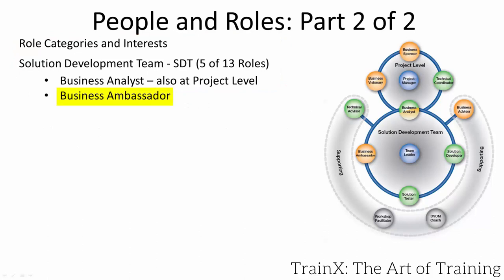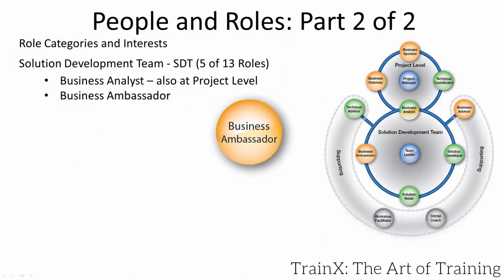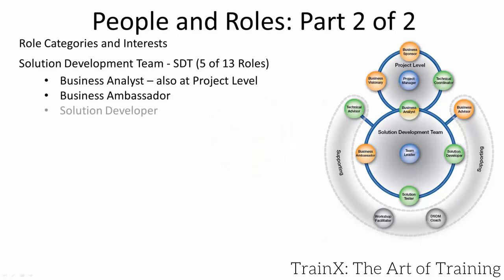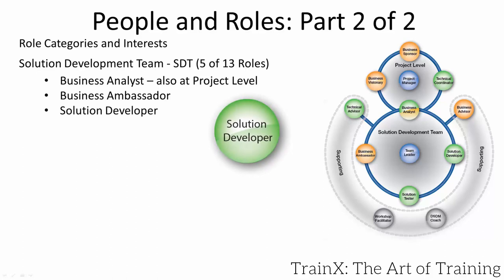The SDT role of business ambassador is someone from the business who can make immediate and empowered decisions on behalf of the business. They could de-scope a could, and depending on the management approach definition rules, potentially a should also. This allows immediate decisions to be made — such as the location of a logo on a marketing brochure — rather than through a lengthy change control process. The solution developer, typically three or four holding this role in the team, would be a software developer in our case study.